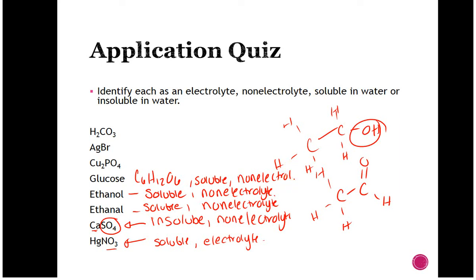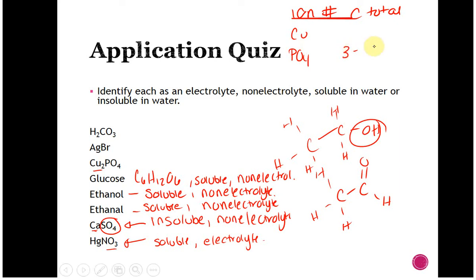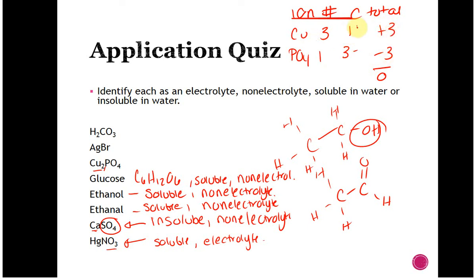Copper(I) phosphate: to find the charge on copper, remember the total charge has to be zero. Phosphate has a charge of minus 3. With three coppers and one phosphate giving a total of minus 3, the coppers must contribute plus 3 total — so 3 divided by 3 gives 1+, confirming copper(I) phosphate. Looking at our table, phosphates are not soluble, and copper is not going to change that — so this is not soluble. Because it's not soluble, it can't break apart, which means it's also a non-electrolyte.